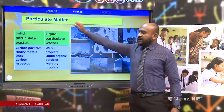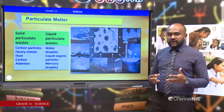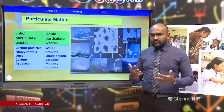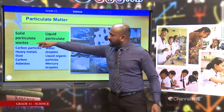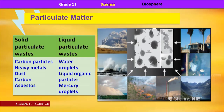The next type of environmental pollutant is particulate matter — very minute particles that cause harm. Under particulate matter, we talk about solid particulate waste like carbon particles, heavy metals, dust, carbon, and asbestos, which can be found as tiny particles in the environment. And liquid particulate matter includes water droplets, liquid organic particles, and mercury droplets.